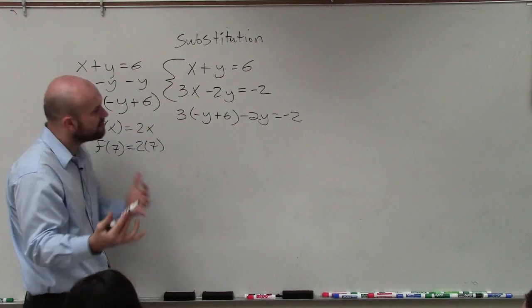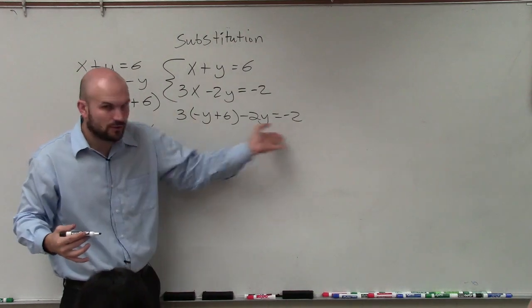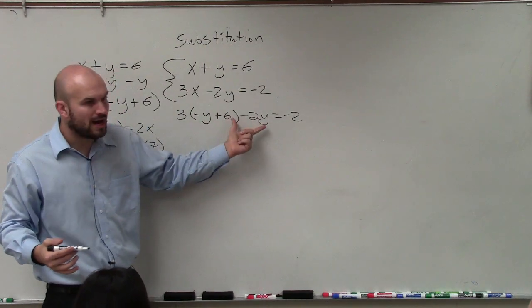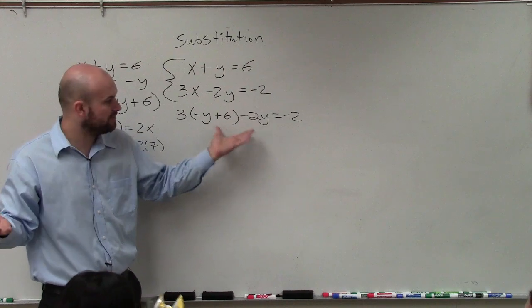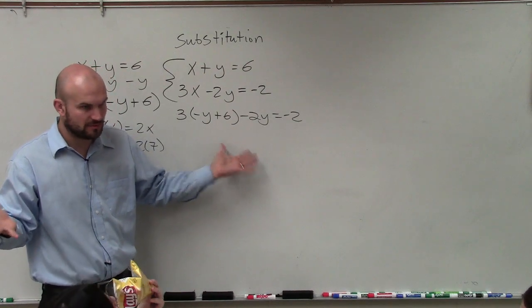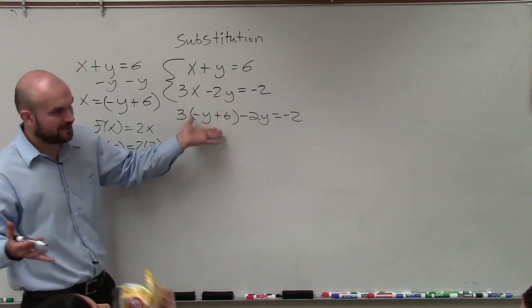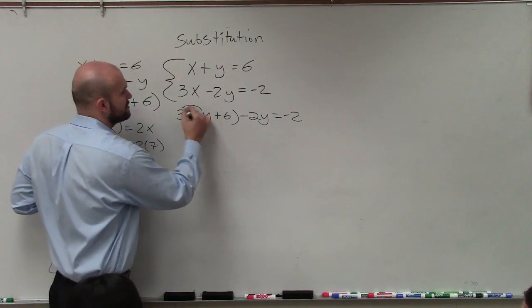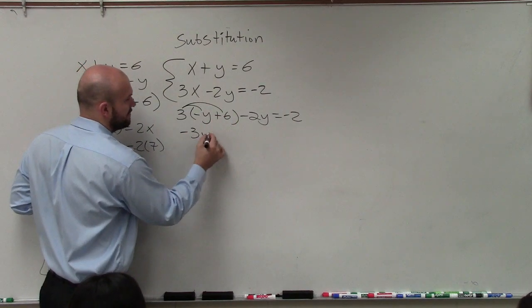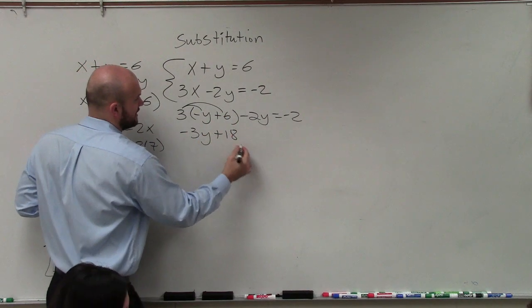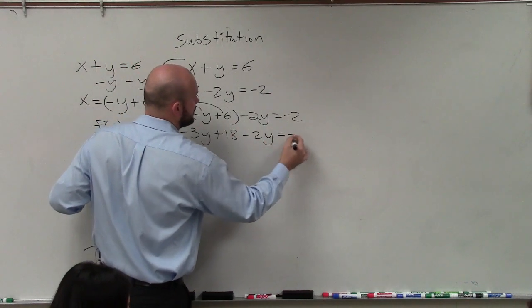And the reason why this is important is because now I have an equation with the variable y. And you can solve an equation with only one variable. But it's more difficult when you have two equations. So now I apply the distributive property. So I have negative 3y plus 18 minus 2y equals negative 2.